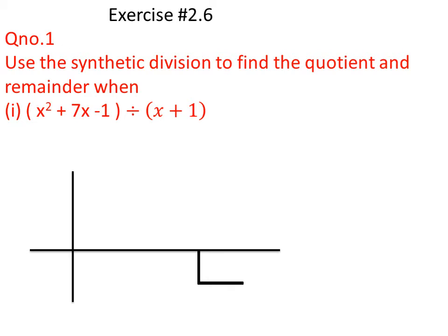We have to solve question number 1 from Exercise 2.6: use synthetic division to find the quotient and remainder. The question is: x² + 7x - 1 is divisible by x + 1. Here x² + 7x - 1 is the polynomial and is called the dividend. The second polynomial, x + 1, is called the divisor.